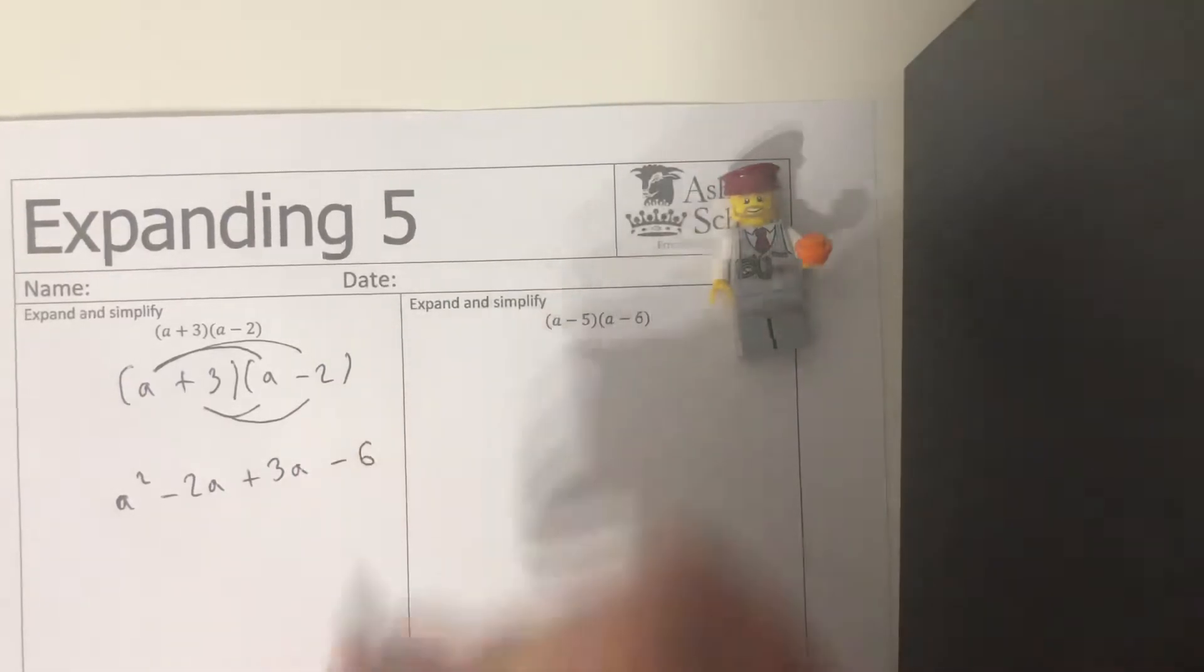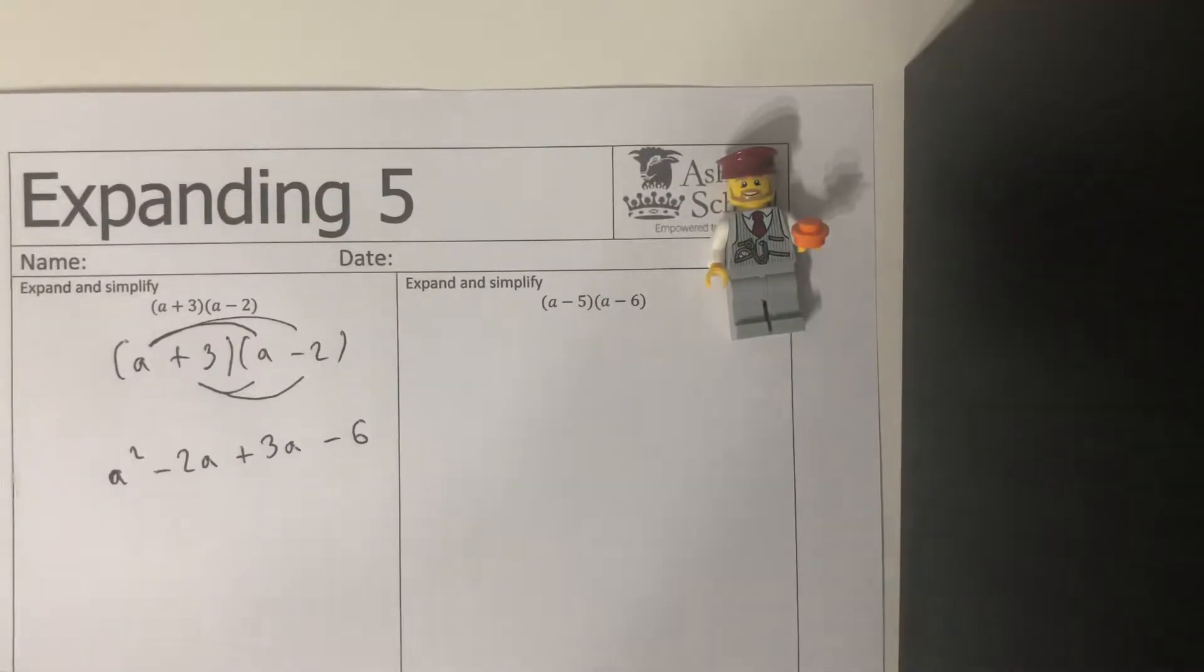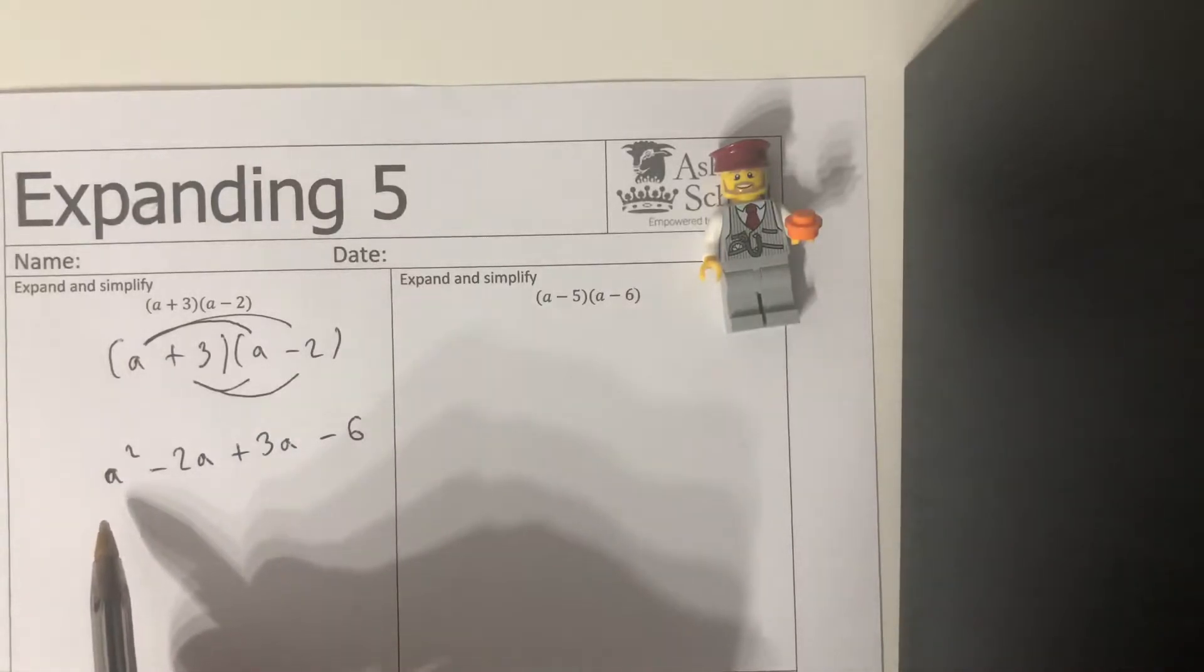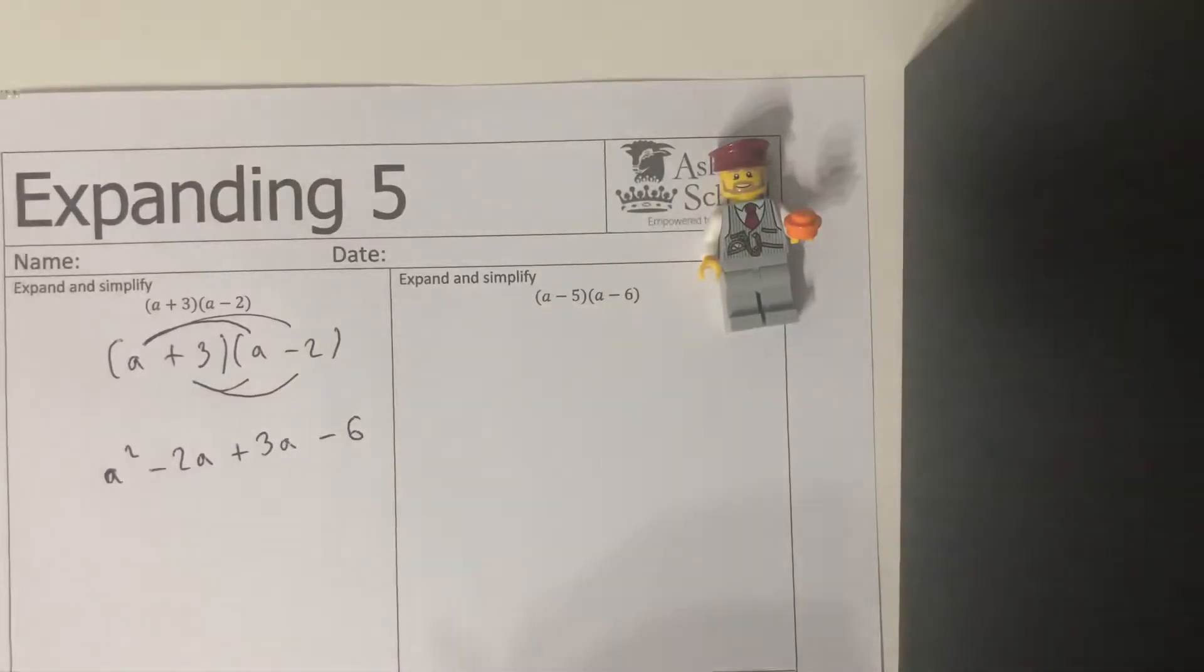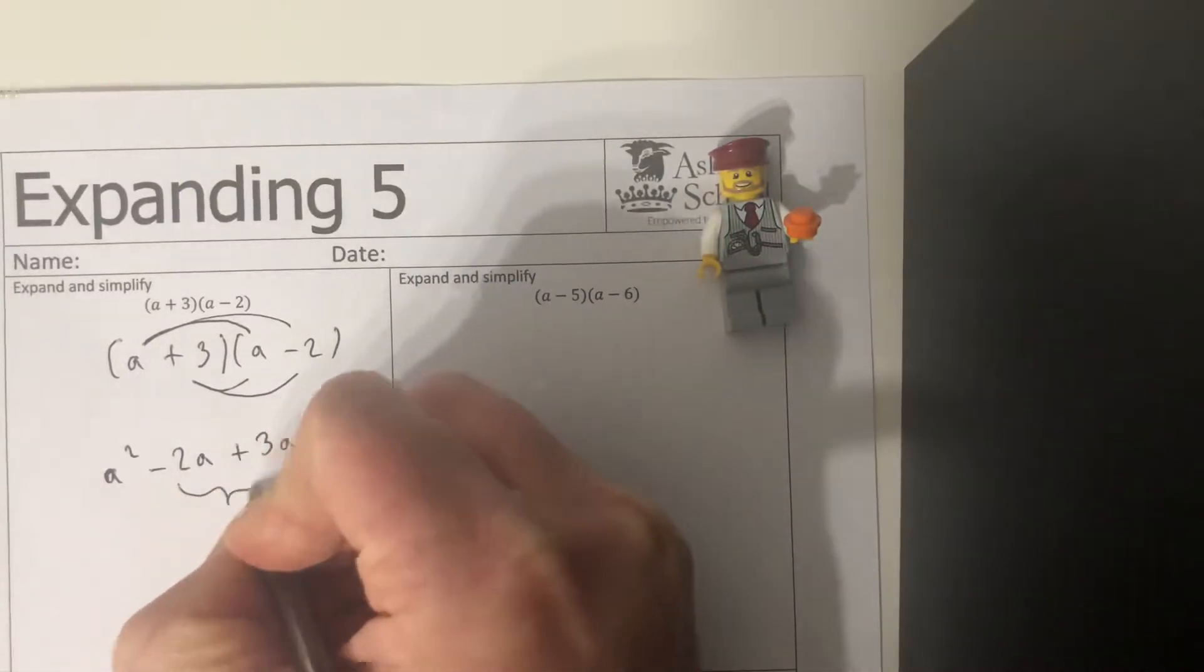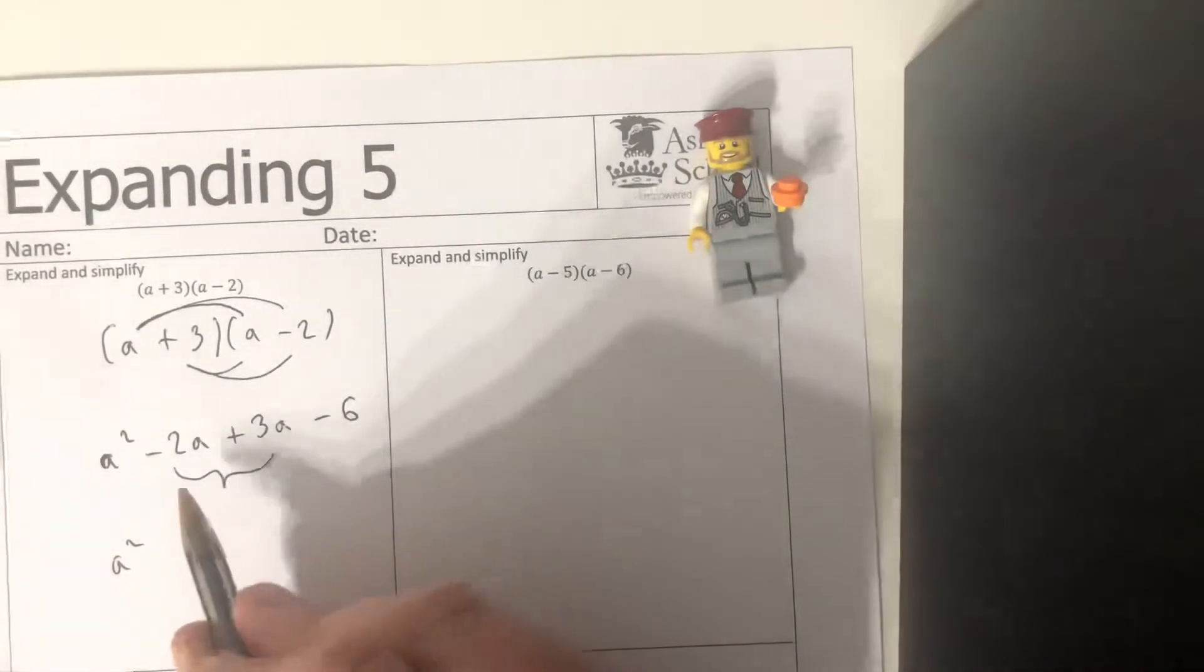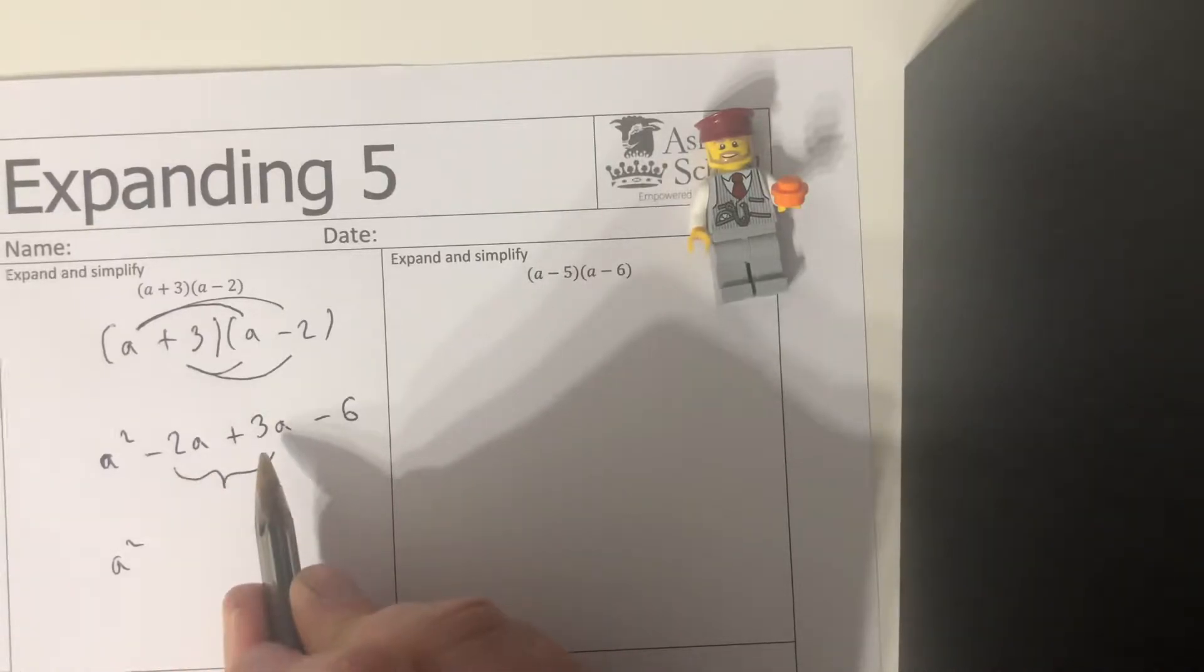And so that will be your final bit. Again we spoke about the importance with these of simplifying where we can. Of course that's the middle of it, so we've just got the a squared on its own, can't do anything with that. The minus six on its own, again no like terms, can't do anything with that. But the a's here can combine like terms, and so we pull them in. We'll be left with a squared minus two a add three a. What does that give us? So minus two add three, it's the same as three minus two if you want to think of it like that.